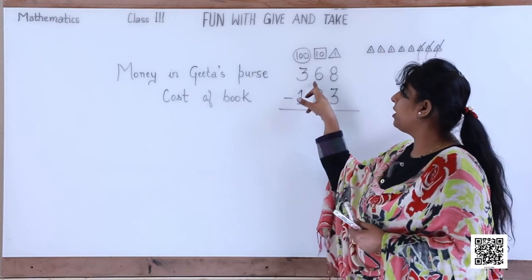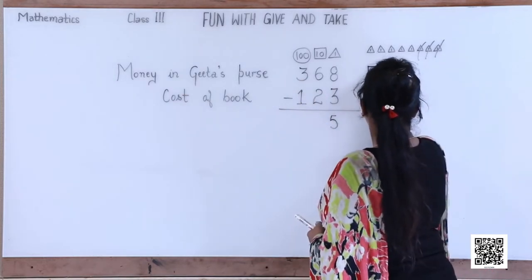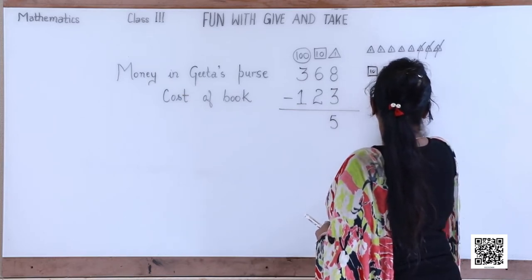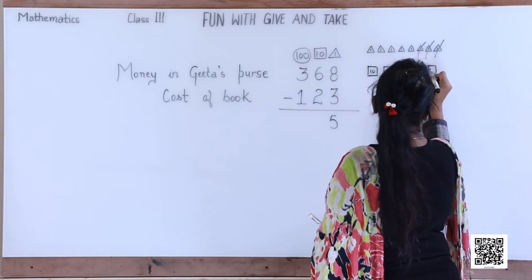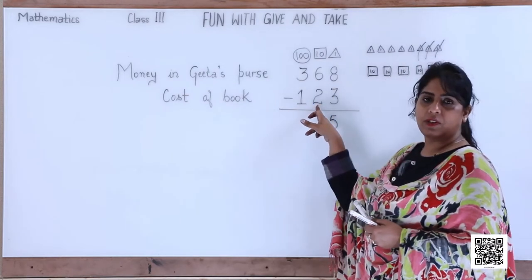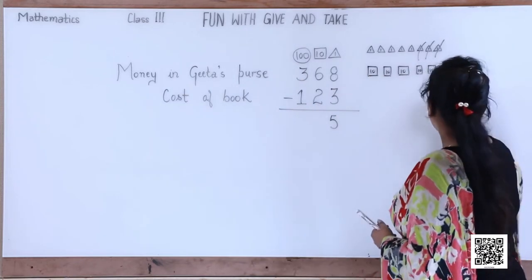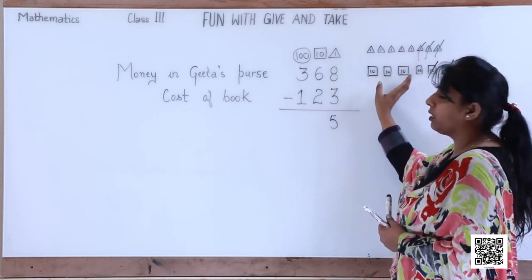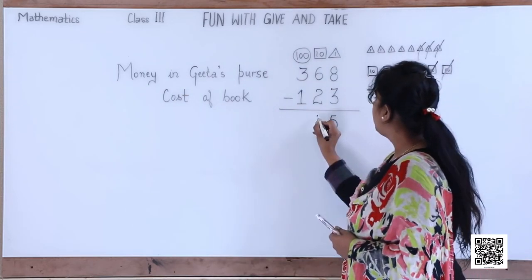Now look at the tens. How many tens do we have? Six. So let's draw six squares: one, two, three, four, five and six tens. How many are we going to subtract? Yes, two tens. So we cancel the first and second. How many tens are we left with? One, two, three and four — we are left with four tens, so we write four.